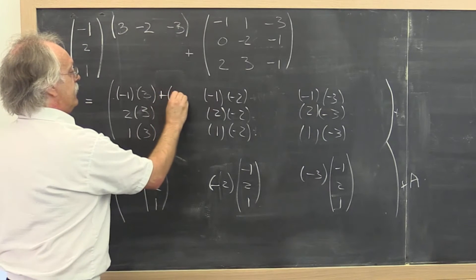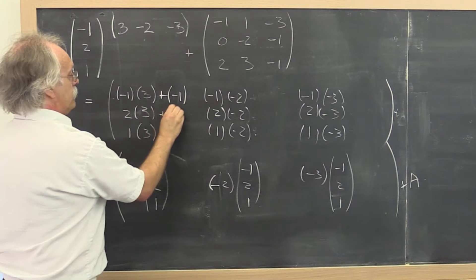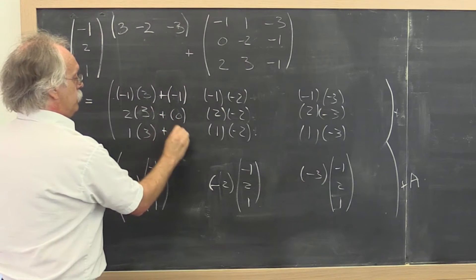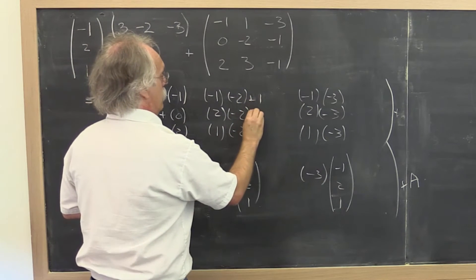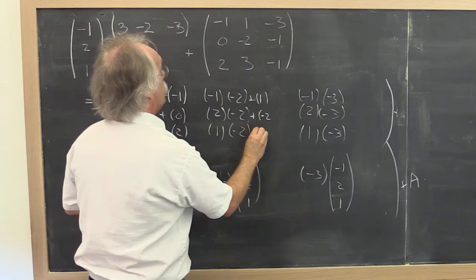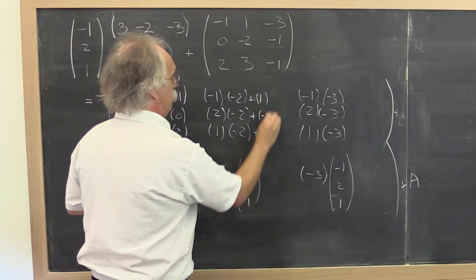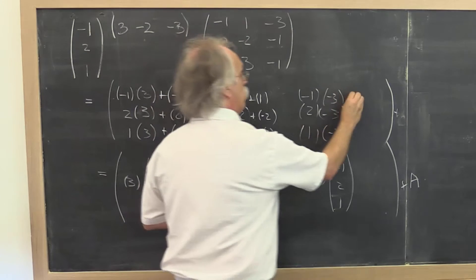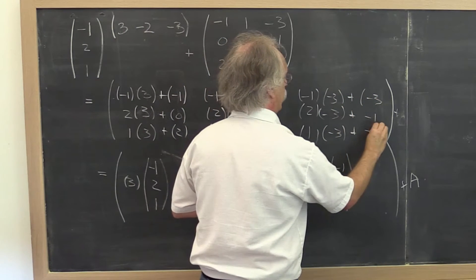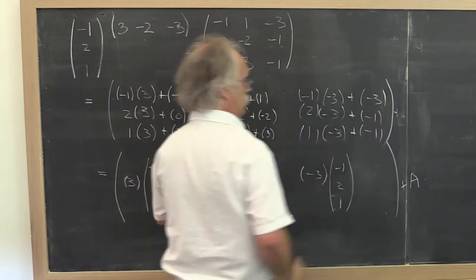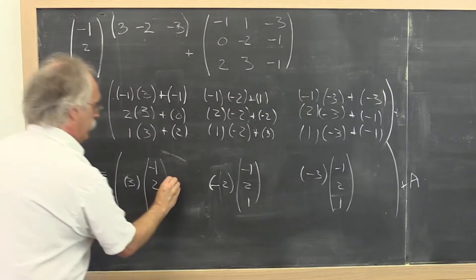We would get plus negative 1, plus 0, plus 2, plus 1, plus negative 2, plus 3, and plus negative 3, negative 1, negative 1. And the same thing down here.